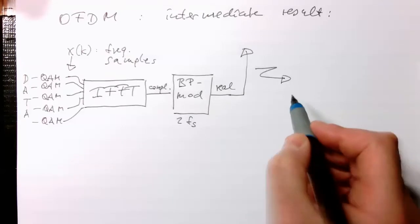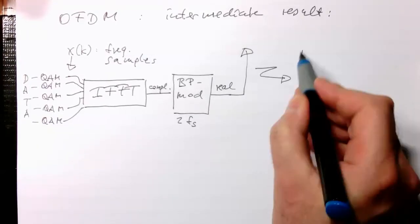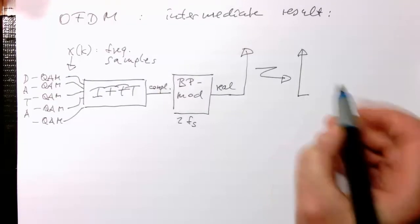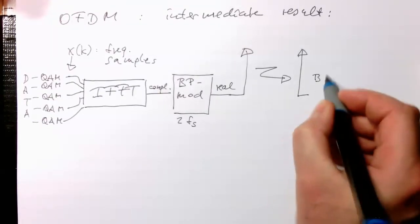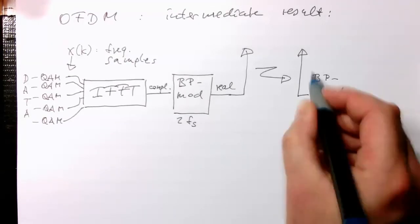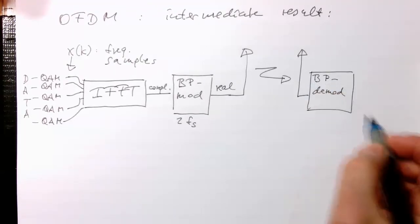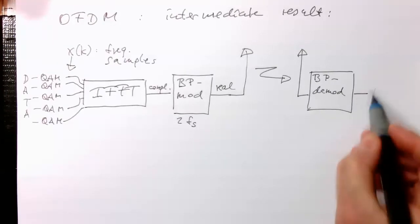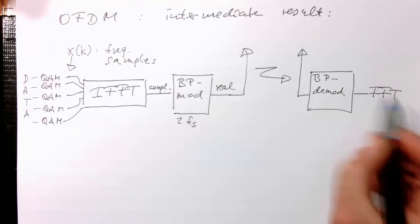So then on the receiver side, obviously we just do the same here. What we always do, we do a bandpass demodulation like that. And then we're doing a Fourier transform, so FFT.